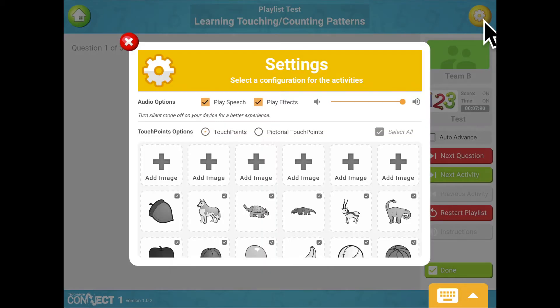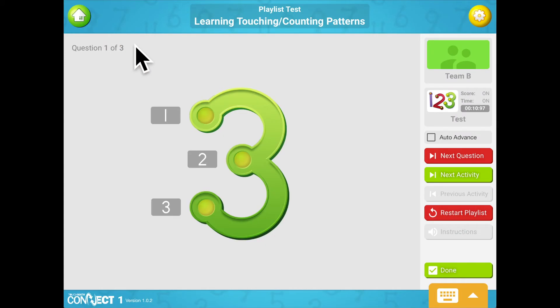Click the Settings button in the upper right corner to further customize your lessons. You will be able to adjust the volume, turn on or off speech and sound effects, and can also customize the appearance of the touch points. Select All will be checked by default, but you can uncheck it and then manually select only the touch point pictures you want to use.